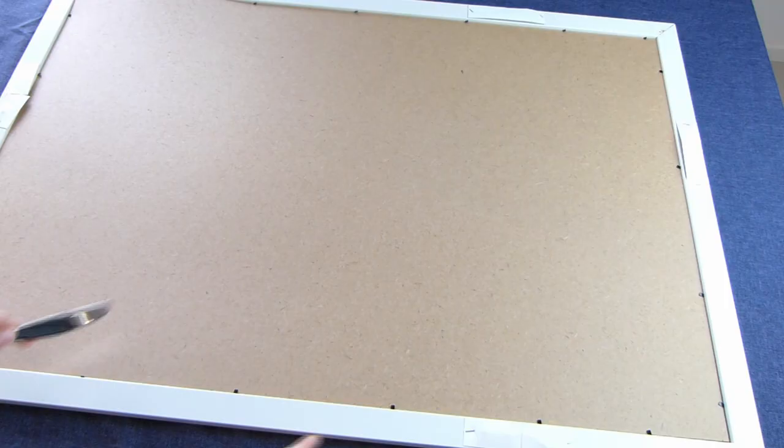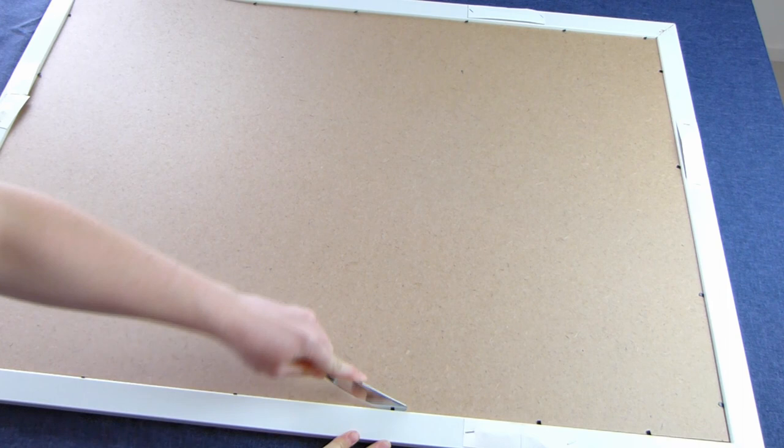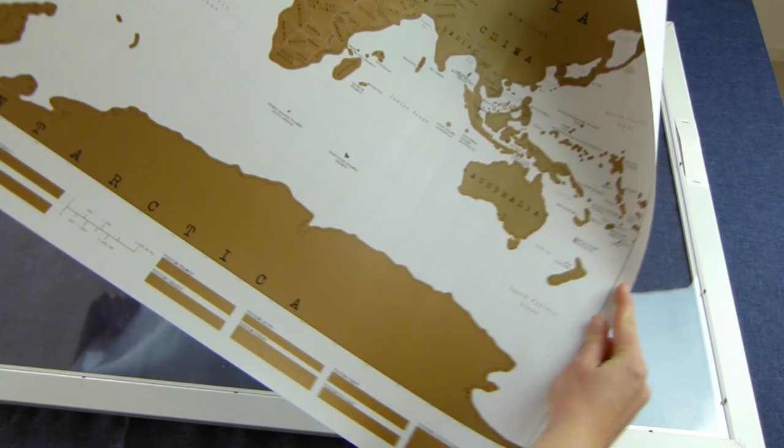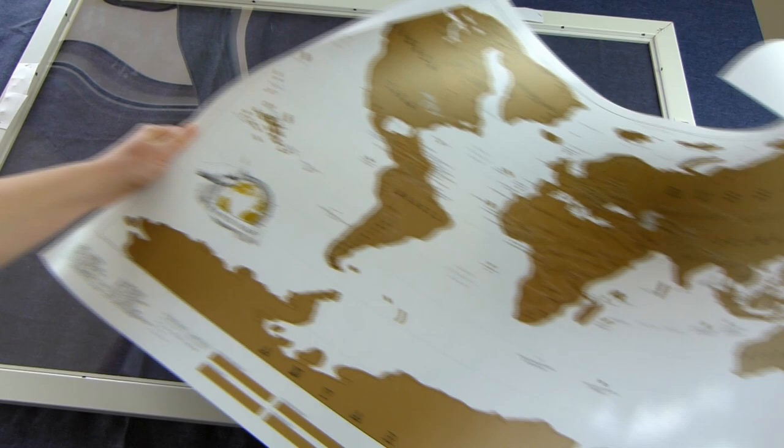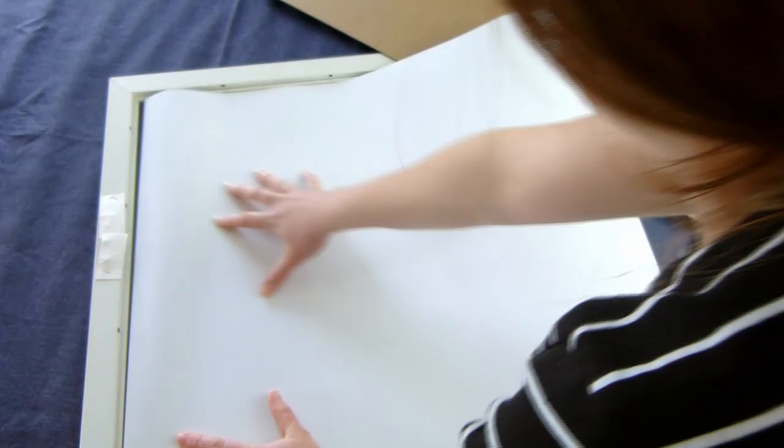Grab yourself a frame that is as close as you can find to fitting your picture. This one's from IKEA but you could also grab a bargain frame from an op shop which might help you to achieve a more unique look. Open the frame up and check to see how the picture will fit. Today I'm framing this awesome travel scratch map.